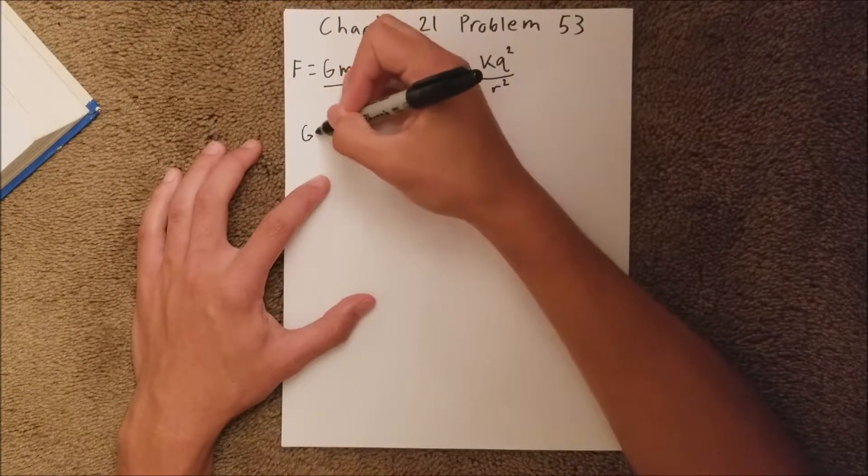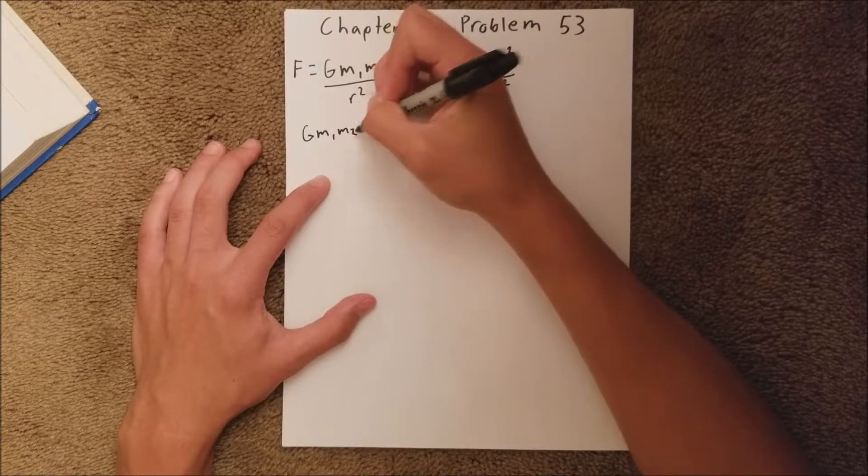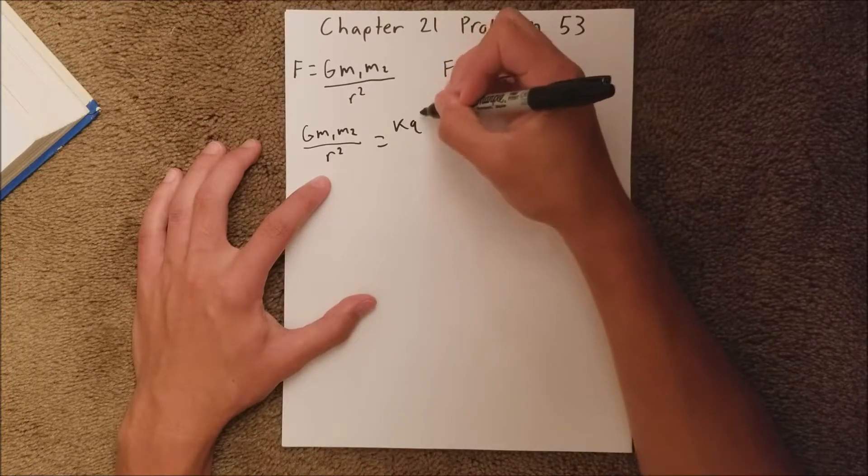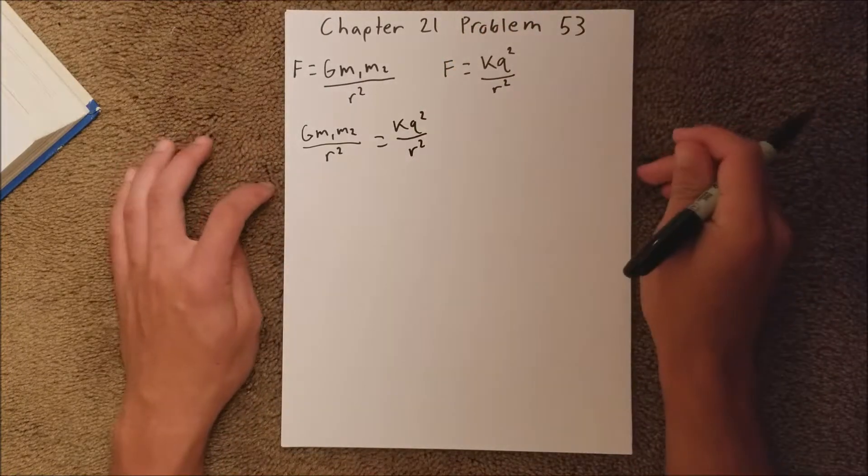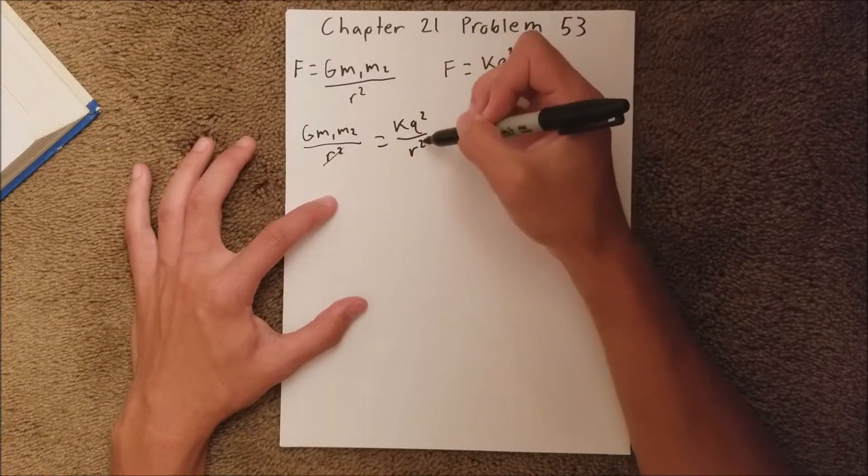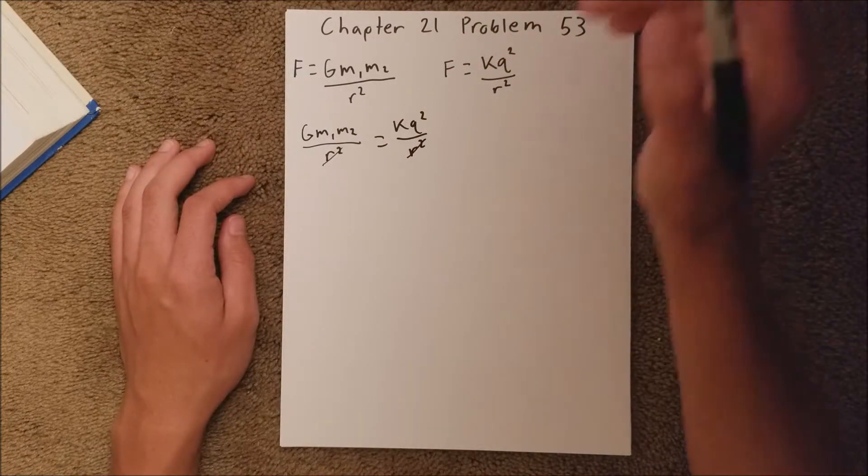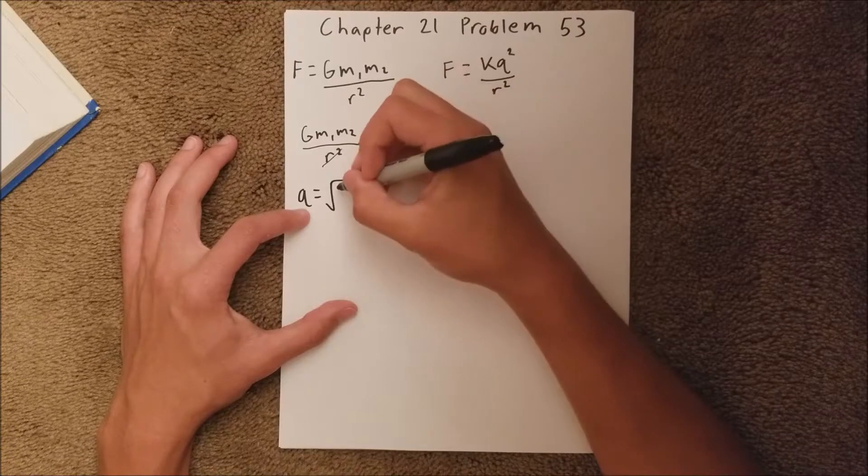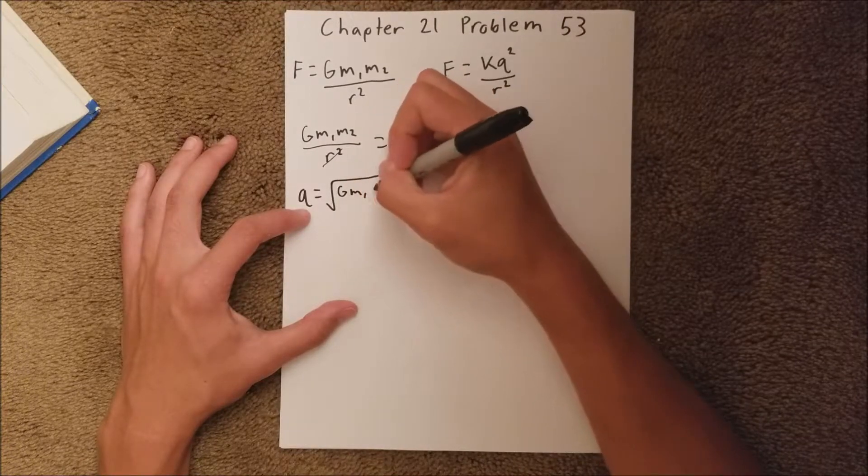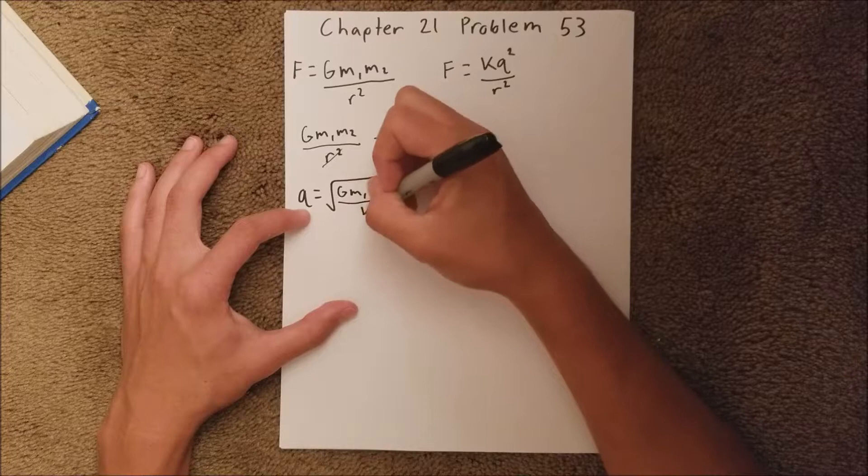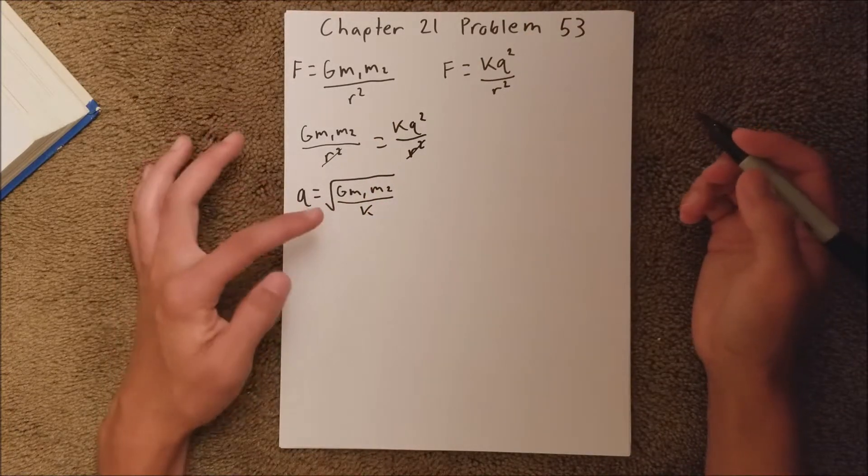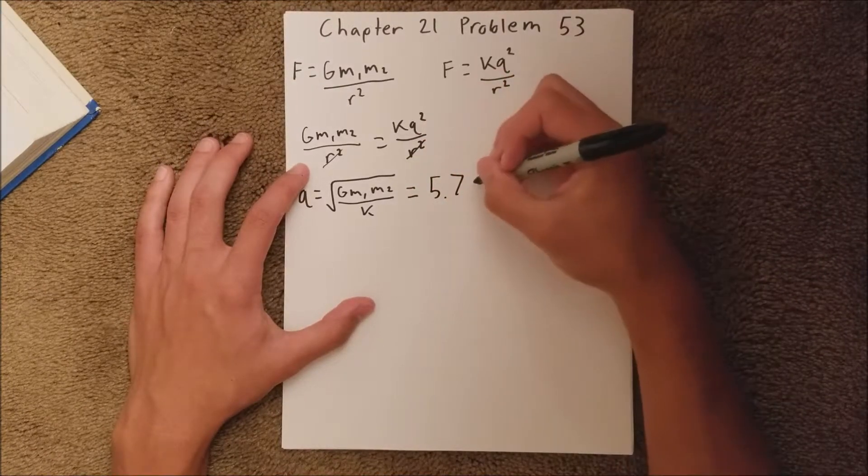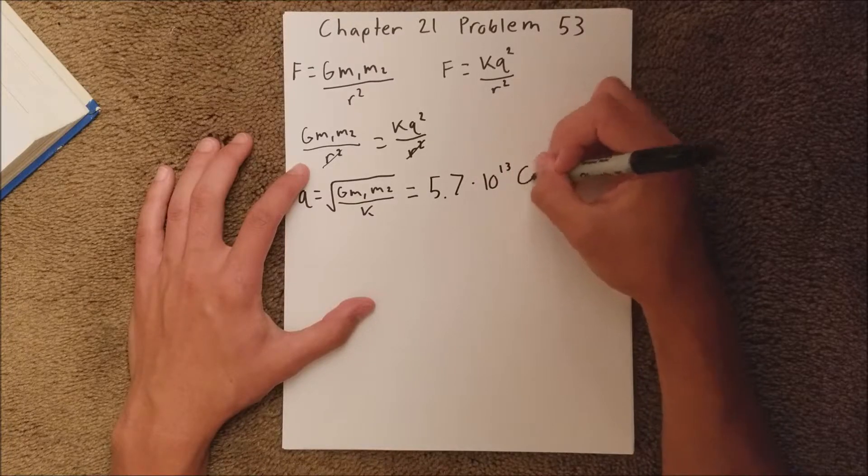So we can say Gm1m2 over r squared equals kq squared over r squared. And if you notice, we can actually cross out these r squared terms. And then we can solve for q, which comes out to be q equals the square root of Gm1m2 over k. And when you plug in the values for this, you get 5.7 times 10 to the 13 coulombs.